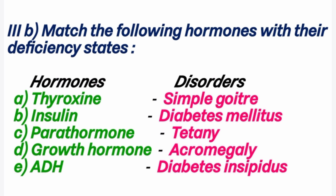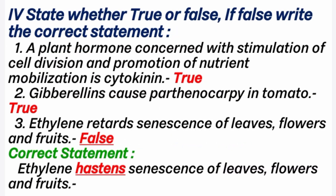e) ADH — anti-diuretic hormone — deficiency leads to the disease called diabetes insipidus, meaning excess water is eliminated along with urine due to less production of ADH. 4th section: State whether true or false. 1st question: a plant hormone concerned with stimulation of cell division and promotion of nutrient mobilization is cytokinin — answer is true.